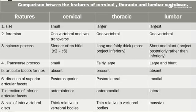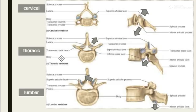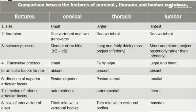For foramina: cervical has two transverse foramina and one vertebral foramen; thoracic has one vertebral foramen; and lumbar also has one vertebral foramen. Here we can see the two transverse foramina for cervical, and the thoracic and lumbar have only the vertebral foramen.